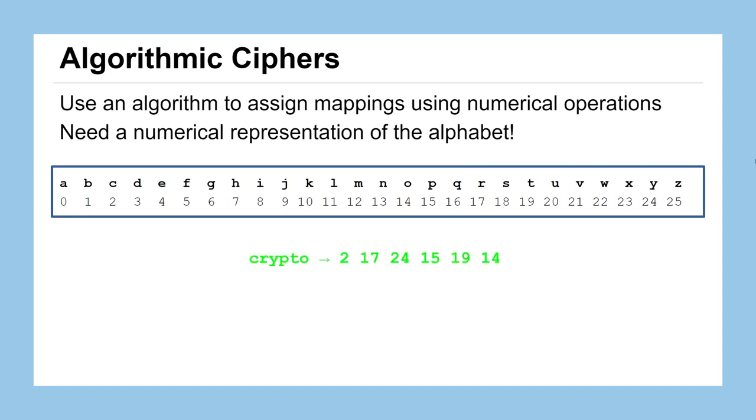So for example, this short word crypto, we could turn into the numbers 2, 17, 24, 15, 19, 0, and 14.